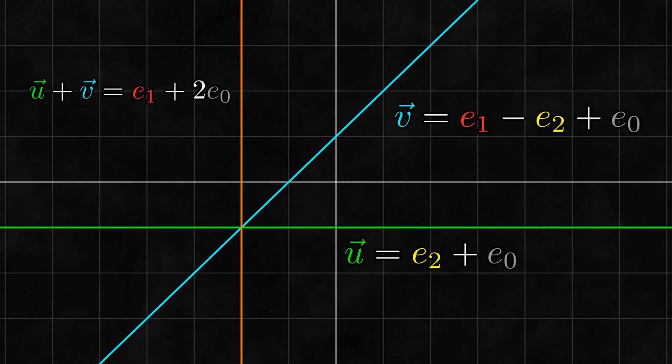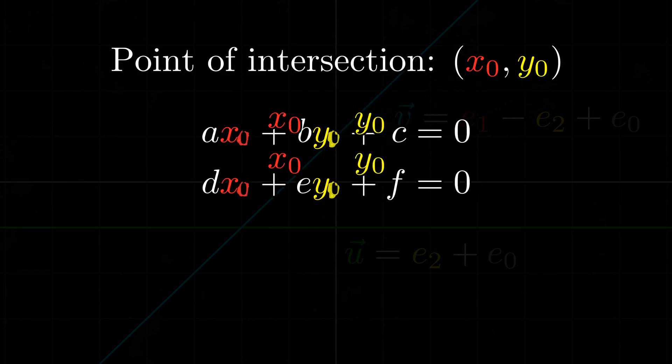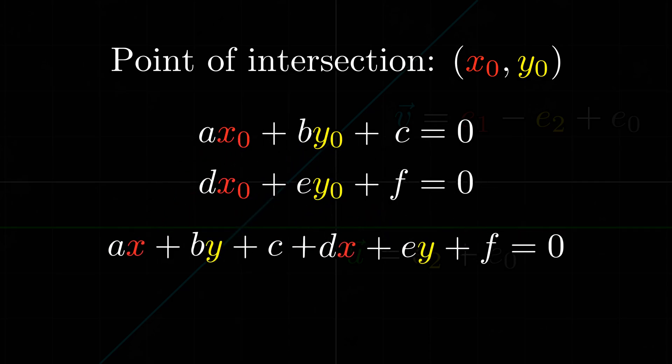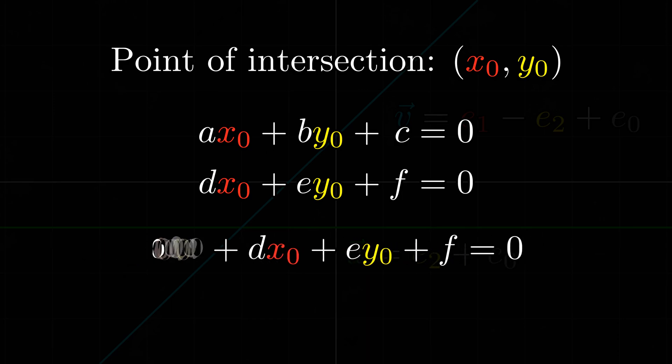First off, we see that it passes through the intersection of the two original lines. Is this always the case? Well, let's think of two arbitrary lines. Their point of intersection is represented by coordinates that satisfy both of these equations. Now when we add the two lines, is this intersection point on the sum? Well, the first half of this equation is the same as the left-hand side of this equation up here, so this part is zero. Similarly, the second half of this equation is the same as the left-hand side of this equation up here, so this part is also zero. Thus, we see that the intersection point does satisfy the equation for the sum of the two lines, which means that the sum of two lines always passes through the intersection of the two lines.